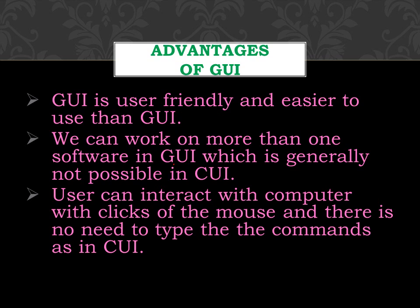Advantages of GUI: GUI is user-friendly and easier to use than CUI. We can work on more than one software in GUI, which is generally not possible in CUI. GUI uses graphics and images with multimedia support. The user can interact with the computer with clicks of the mouse and there is no need to type commands as in CUI, so GUI is better than CUI.